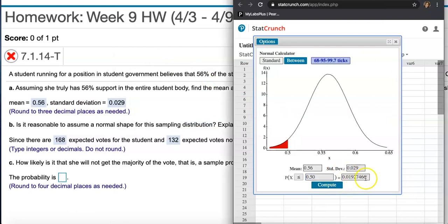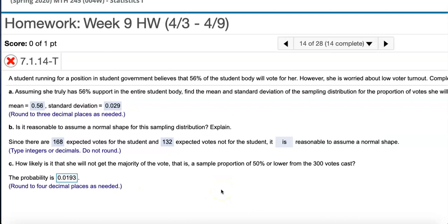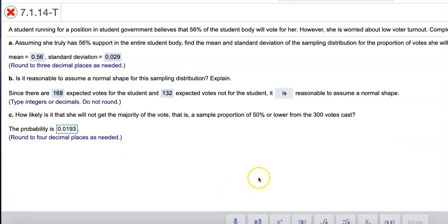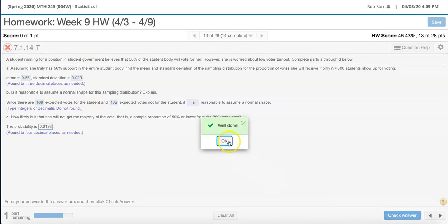Hit enter, we computed it, we got the probability. I'm going to copy this and put it in this box and round. They want you to round this to the nearest four decimal places. Looks like I have one, two, three, four numbers, so I'm going to have to round this up to 0.0193. That probability is going to be about 1.93%. Check answer, well done.